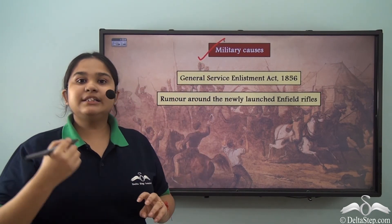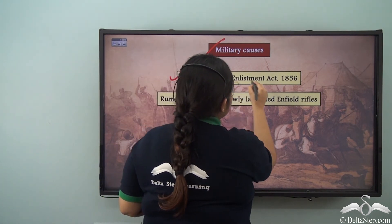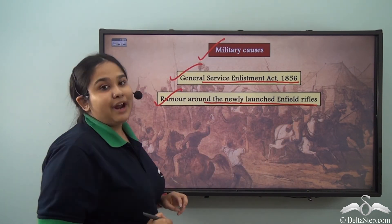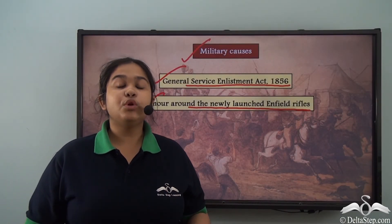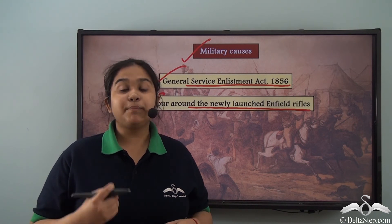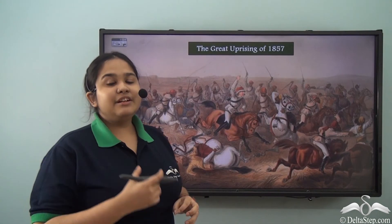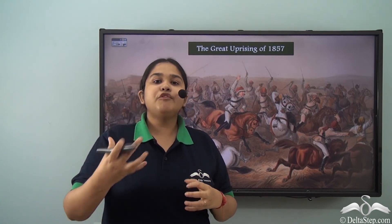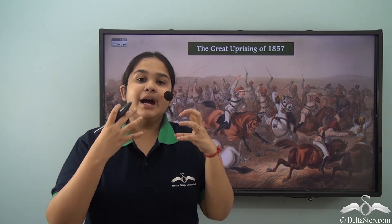The military causes that sparked the events of 1857 were: first, the General Service Enlistment Act of 1856, and second, the rumour around the newly launched Enfield rifles. All these military causes gave rise to the revolt of 1857, which spread across the subcontinent of India. The people were enraged and wanted to revolt against the British. The uprising broke out on 29th March 1857 when the Bengal Regiment rose in revolt, and it continued for a year, becoming the Great Uprising of 1857.